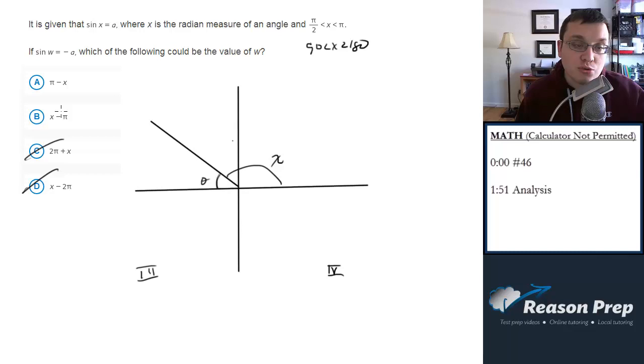So it's either pi minus x or x minus pi. So let's put some numbers on this. If x is, let's say, 120 degrees, if I do 120 minus—I'll do this one first. If I do 180 minus 120, I would get 60 degrees. That would be in quadrant 1. No good.